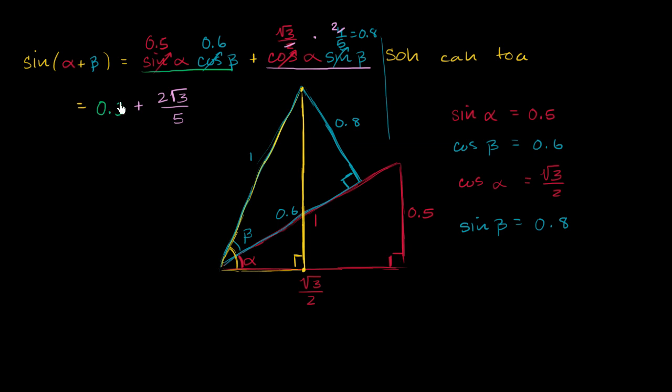I feel a little uncomfortable having it in these two different formats, where I have a fraction here and I have a decimal here. So let me just write the whole thing as a rational expression. So 0.3 is obviously the same thing as 3 tenths. So that's the same thing as 3 over 10 plus, now this, if I want to write it over 10, this is the same thing as 4 square roots of 3 over 10. And of course, if we add these two, we are going to get 3 plus 4 square roots of 3, all of that over 10. And we are done.